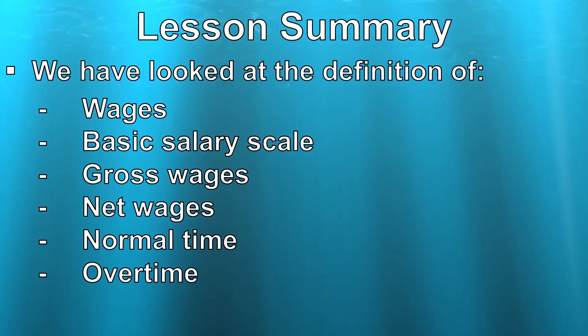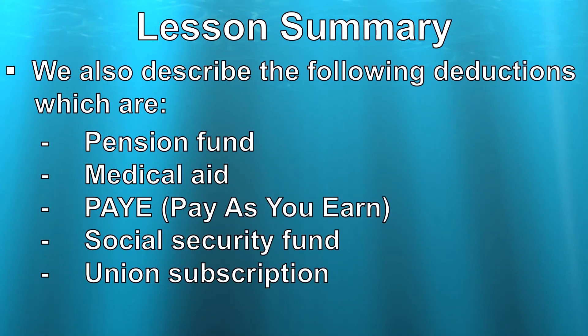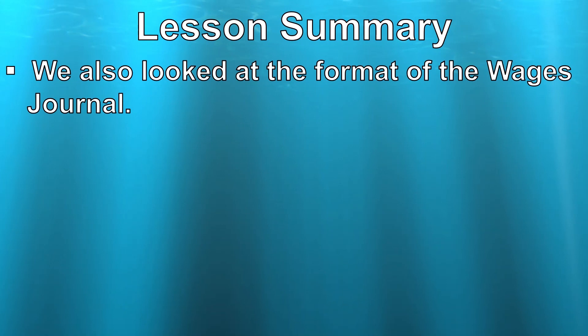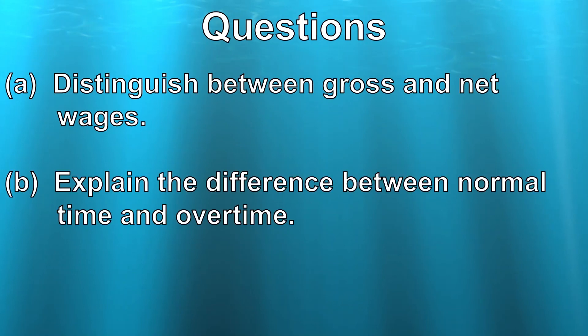We have looked at the definition of wages, basic salary scale, gross wages, net wages, normal time, and overtime. We also described the following deductions: pension fund, medical aid, PAYE, social security fund, and union subscription. We also looked at the format of the wages journal. Before I say goodbye, I would like to ask the following questions: A. Distinguish between gross and net wages. B. Explain the difference between normal time and overtime. Thank you for watching and goodbye.